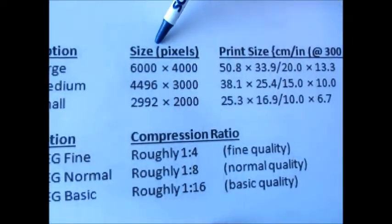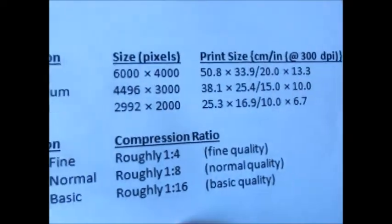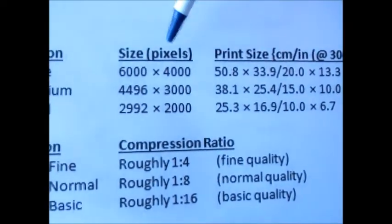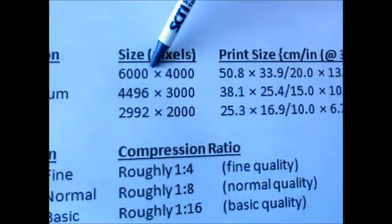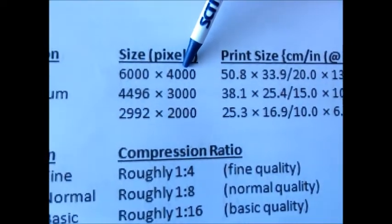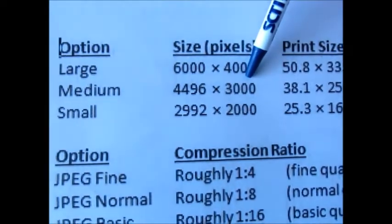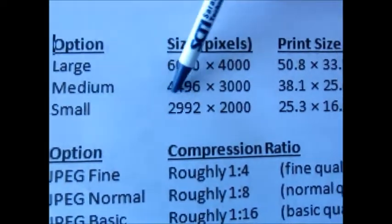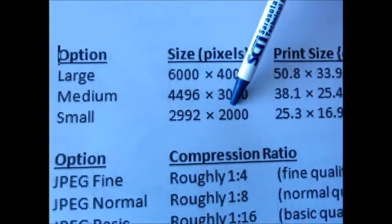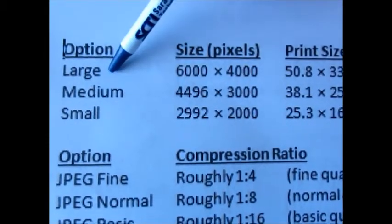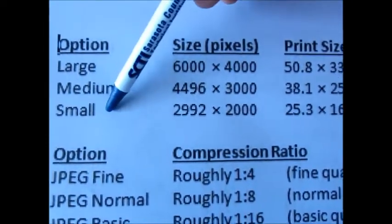When you've heard large fine, let's talk about that. The first word is the actual size of the image in pixels. For my Nikon d7100, the large is 6000 by 4000 pixels, the medium is 4496 by 3000, and the small is 2992 by 2000. So that's the first word: either large, medium, or small.